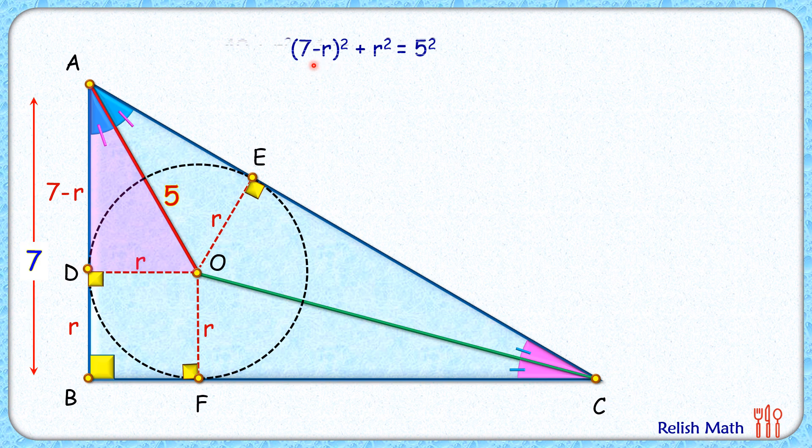Simplifying this equation, we'll get this as our equation. Dividing this equation by 2, we'll get r² - 7r + 12 = 0. Solving it by splitting the middle term, we'll get the value of r as 3 or 4.